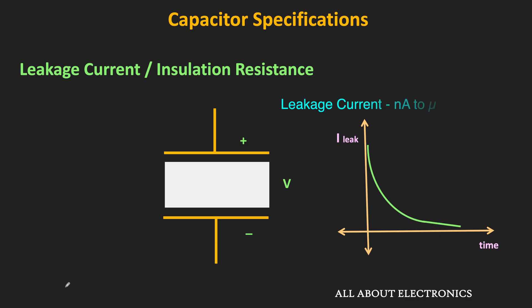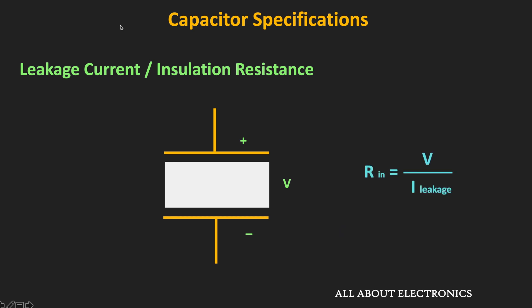Typically, leakage current varies from the nanoampere to microampere range. But for certain types of capacitors like film and ceramic capacitors, since the leakage current is very small, it is usually expressed as insulation resistance — that is, the applied capacitor voltage divided by the leakage current. Typically for these capacitor types, this insulation resistance is in the giga-ohm range.